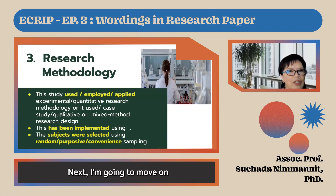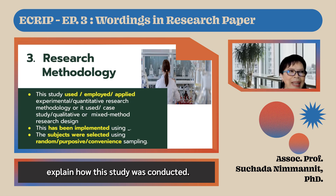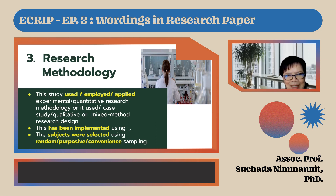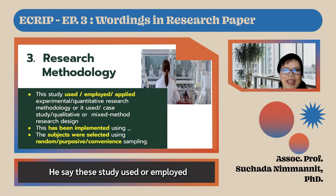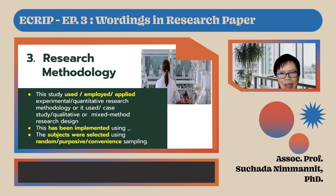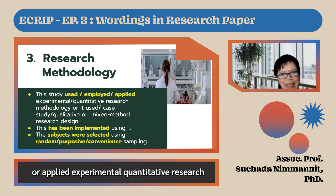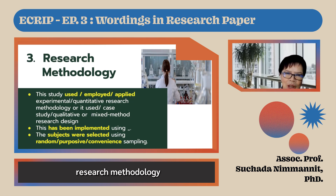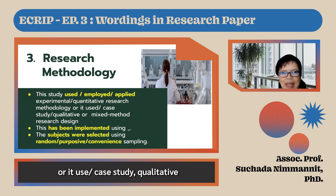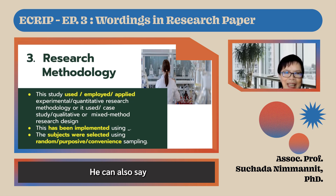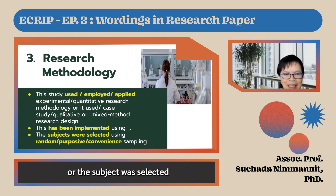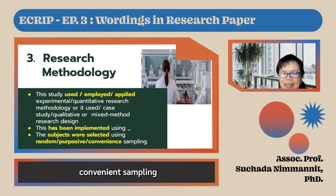Next, I'm going to move on to research methodology. In this section, the researcher explains how the study was conducted. He might say: 'This study used, employed, or applied experimental or quantitative research methodology', or 'It used case study, qualitative, or mixed method research design.' He can also say: 'This has been implemented using…', or 'The subjects were selected using random, purposive, or convenient sampling.'